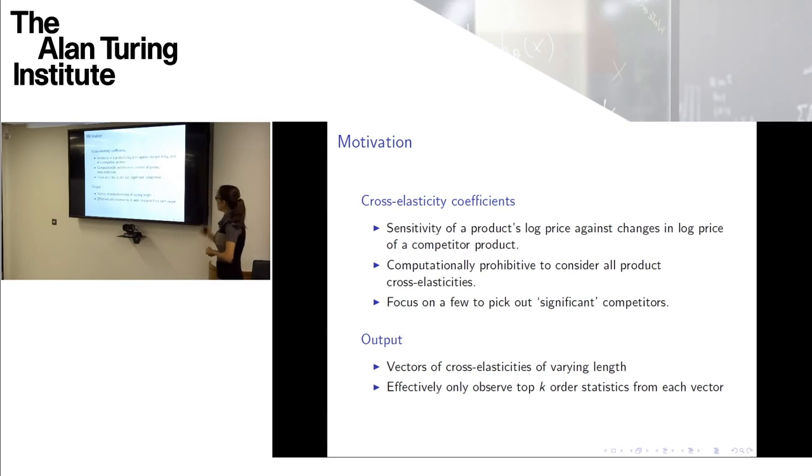Now what happens is, it's computationally prohibitive to consider all possible product cross-elasticities, right? There are millions of possible competitors. You know, you could claim that if you want to buy milk, any other product can be a competitor. So the way that these cross-elasticities are computed is they are reduced to a small set, 10 or 20. And then from these, a small number are extracted as significant in some sense. So what we get to observe is for each product, a vector that has a set of cross-elasticities that has, you know, not a fixed number of entries.